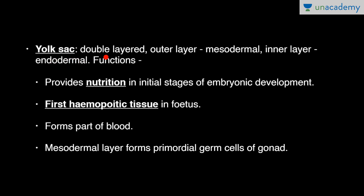Second is the yolk sac — double-layered, outer layer is mesodermal and inner layer is endodermal. Functions: it provides nutrition in initial stages of embryonic development, it is the first hemopoietic tissue in the fetus (blood-forming tissue), and the mesodermal layer forms primordial germ cells of the gonad. This is very important — primordial germ cells of the gonad are formed by the mesodermal layer of the yolk sac. Basically yolk sac is nutritive in function.